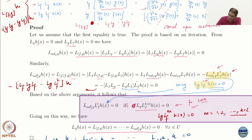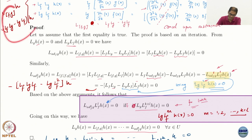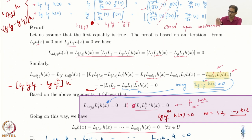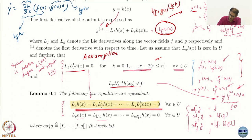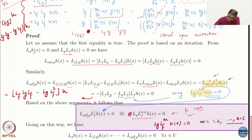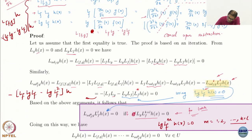I expand L_{ad_f g} again. L_{ad_f g} is Lf Lg − Lg Lf by the same formula. So this becomes (Lf Lg − Lg Lf)(Lf h). This gives Lf(Lg(Lf h)) − Lg(Lf² h). Now Lg Lf² h = 0 by assumption, and Lg Lf h = 0 as well. So L_{ad_f² g} h = 0.